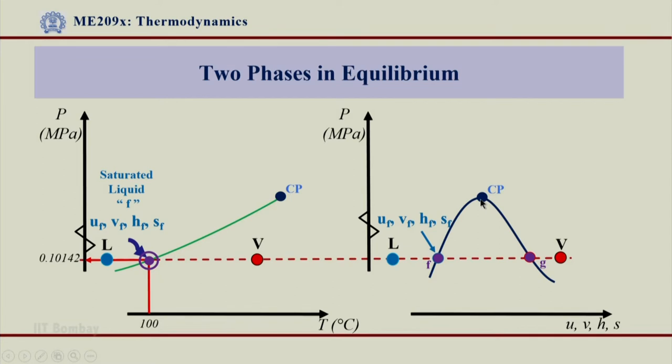Correspondingly, if you see on a PV diagram, if I say I have taken this property as V, this is my saturated liquid line, this is saturated vapor line. Both these lines merge at critical point over here. This point on this line, what we see, is 100% liquid. On this line, what we see is 100% vapor.